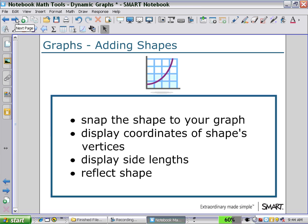First, we'll start with adding shapes to the graph using the SNAP2 grid. We'll then display the coordinates of the vertices of the shape and display its side length. Finally, we will reflect the shape.